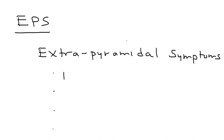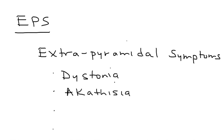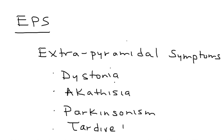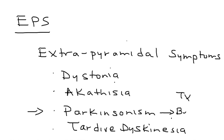There are four main extrapyramidal symptoms: dystonia, akathisia, parkinsonism, and tardive dyskinesia. These are very commonly tested on licensing exams. Also tested is what the appropriate treatment is if any of these occur. For example, if a patient on an antipsychotic develops parkinsonism, the treatment is giving benztropine.